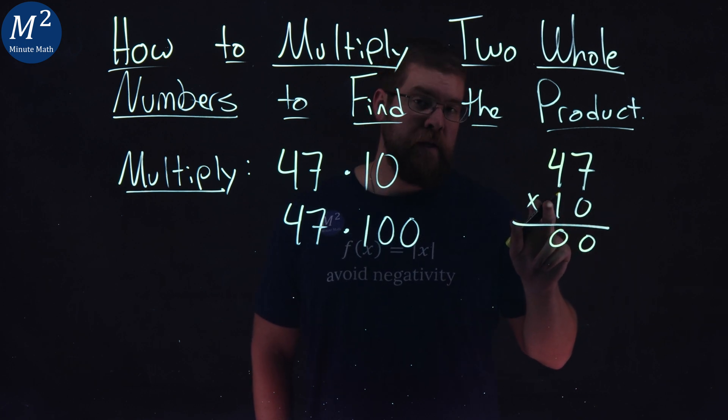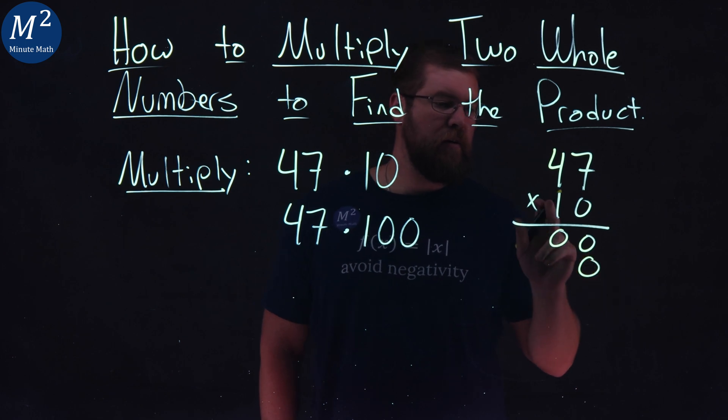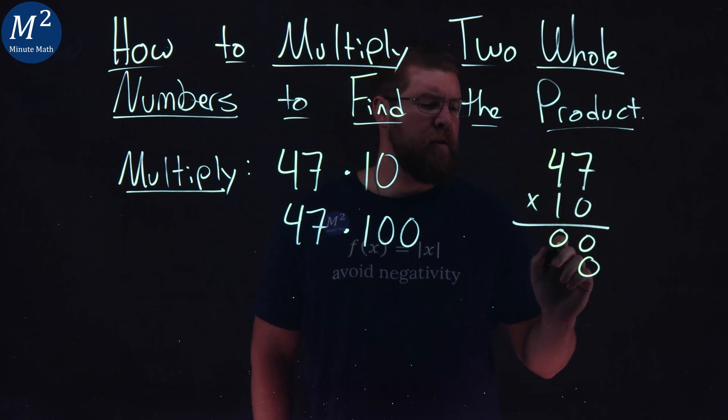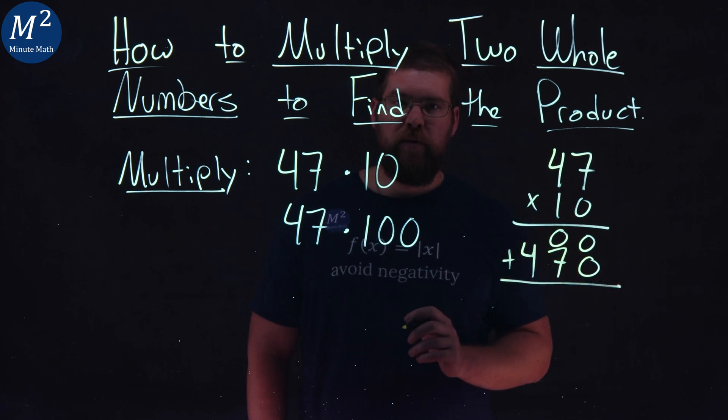We then start with the one in the tens place here. I put a zero place value, because now we're in the tens place, and follow the same process. One times seven is a seven. One times four is a four.